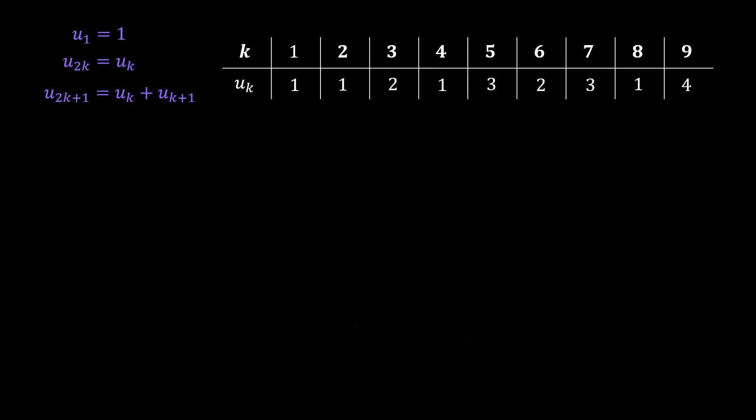The very first statement to prove is that uk is a sequence of positive integers. This is almost obvious, but we still have to be very careful. This is actually obvious because each term is defined in terms of earlier terms or as the sum of earlier terms, and the first term is positive. So by using very basic induction, we can very quickly establish this statement.